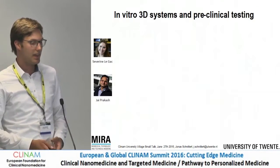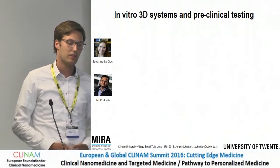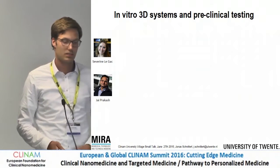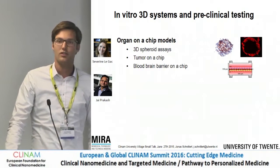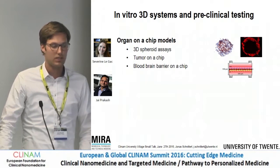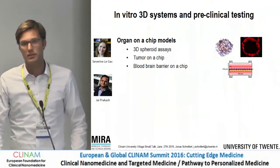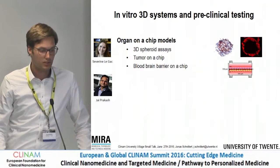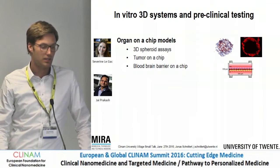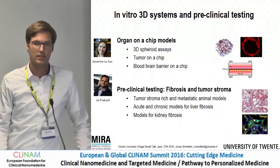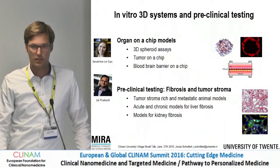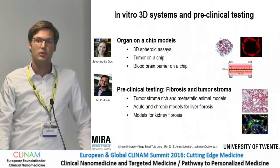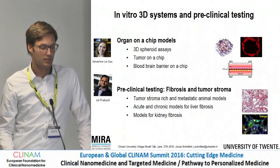Another big line of research done at the university is the development of in vitro 3D systems, and we also do preclinical testing. Severin-Legak and other researchers are specialized in the development of organ-on-a-chip models. In collaboration with our team, we have developed tumor stroma-rich 3D spheroid assays and tumors-on-a-chip. There is also a blood-brain barrier on a chip in development for nanoparticle testing. We do preclinical testing specialized on fibrosis and fibrosis-driven cancer, with tumor stroma-rich and metastatic animal models, as well as acute and chronic models for liver fibrosis and kidney fibrosis.